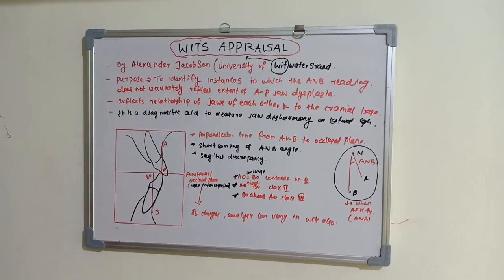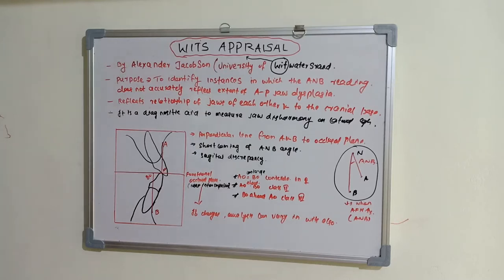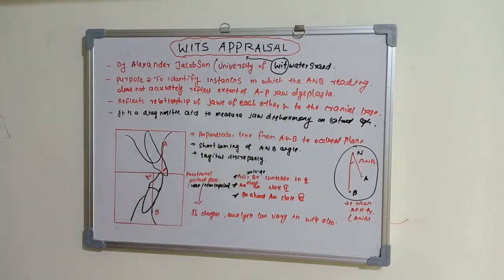The Wits appraisal is an adjunct to the ANB angle. Because of the problems associated with angular measurements, we use this dental parameter — the linear distance between AO and BO — providing additional information regarding jaw disharmony in the anterior-posterior direction. That is all about the Wits appraisal. I'll come up with a new session on Dentistry and More. Thank you.